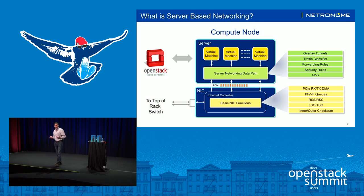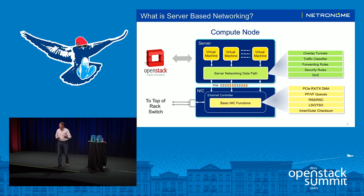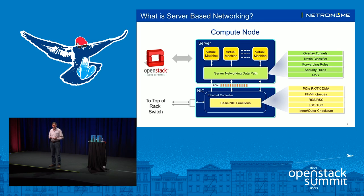In OpenStack clouds, there is typically overlay network support for network virtualization and multi-tenancy. Overlay tunnels such as VXLAN or other tunnel protocols need to be processed in the server networking data path. Other things that can be done include more complex traffic classification for policy-based forwarding, security policy — both stateless and stateful — as well as workload-based QoS, metering, statistics, and stateful operations. This rich set of server-based networking data path functionality is critical to OpenStack clouds, and today it's commonly implemented in software, either running in kernel space or user space.